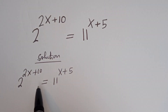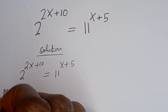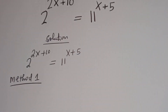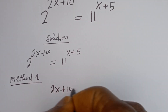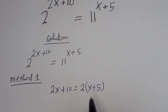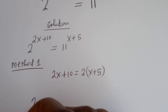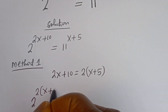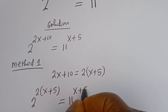Now we are going to solve this equation in two different ways. Let's consider the first method. We have 2 to the power of 2x plus 10 is equal to 11 to the power of x plus 5. Note that 2x plus 10 equals 2(x plus 5), so this can be written as 2 to the power of 2(x plus 5) is equal to 11 to the power of x plus 5.